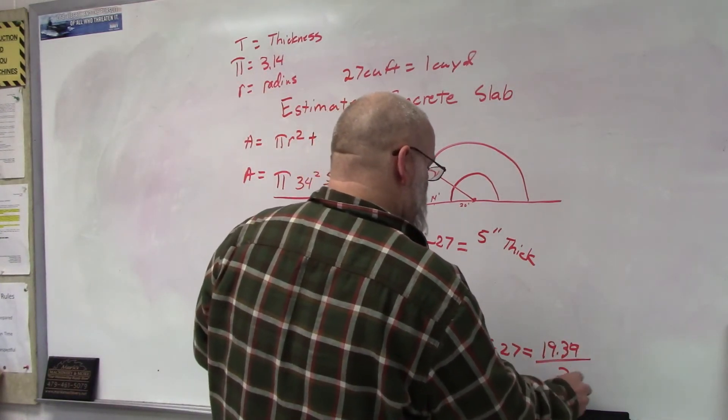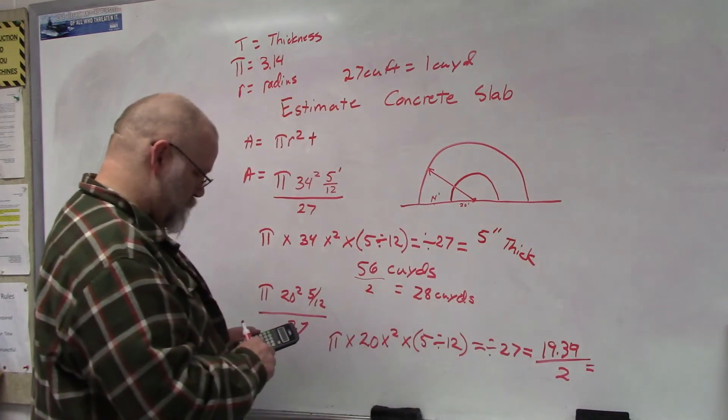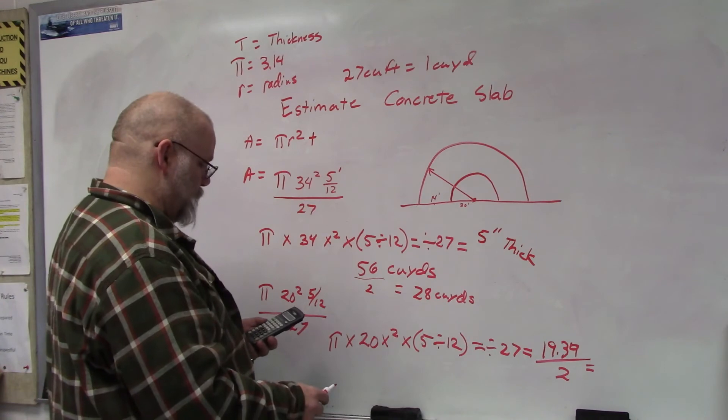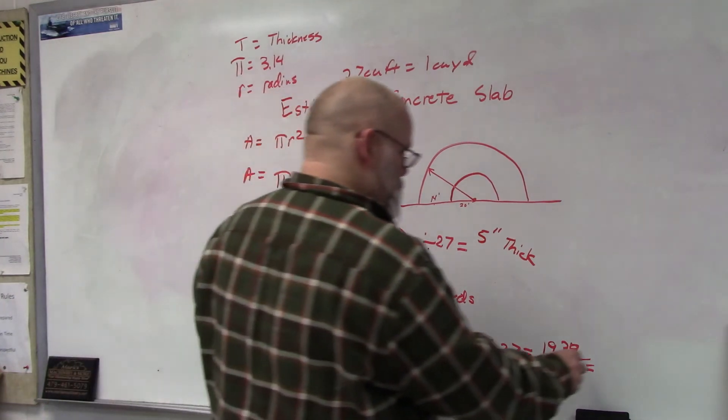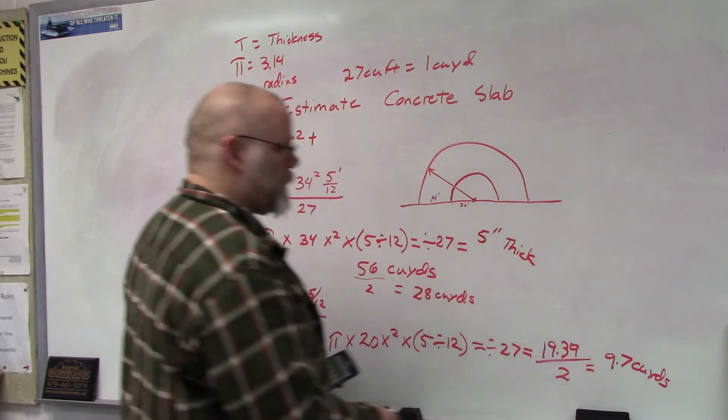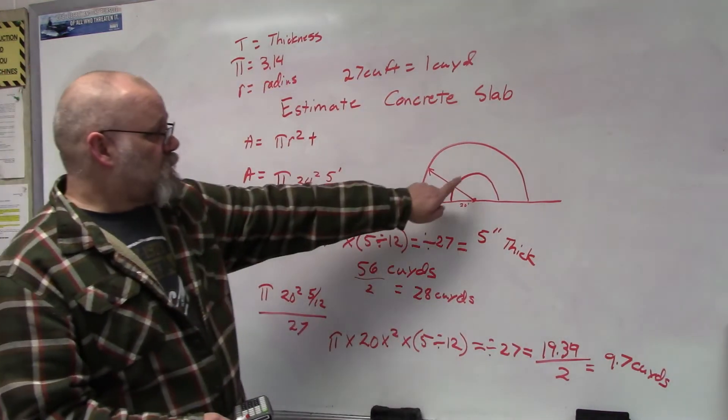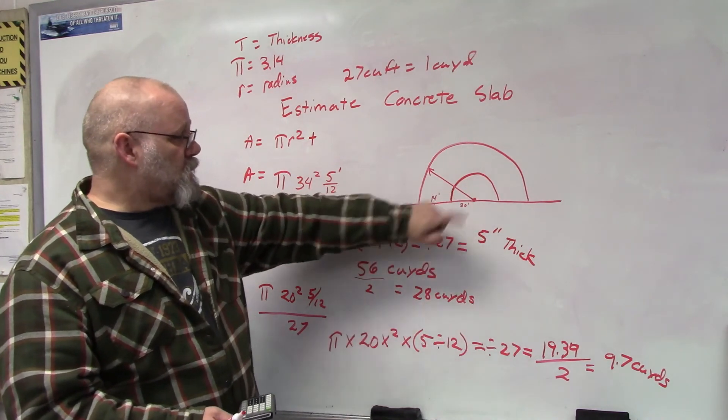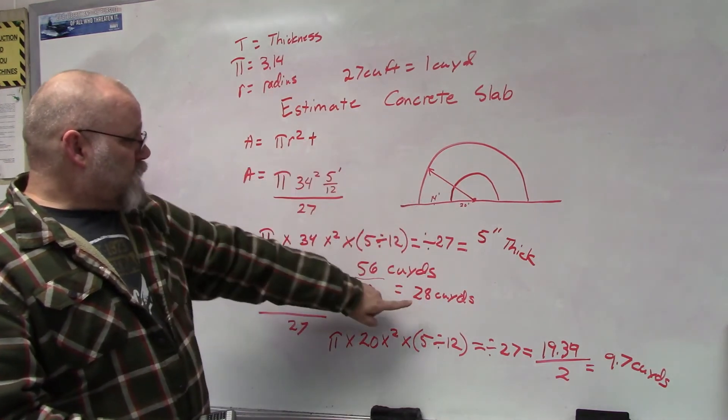Then we have to divide that by 2 because we only want half, and that's 9.7 cubic yards. So this half of the inner circle would take 9.7 cubic yards, the whole outer circle would take 28 cubic yards.